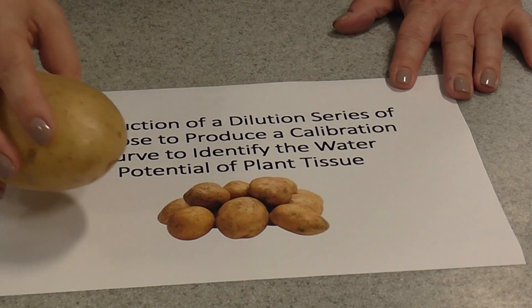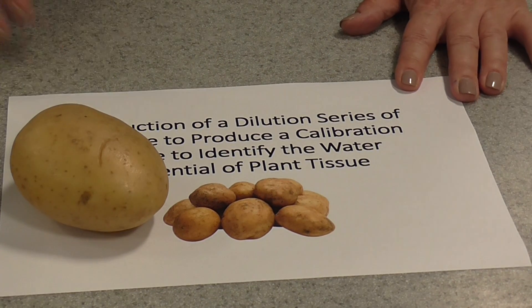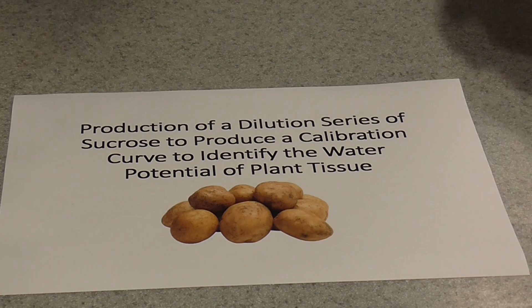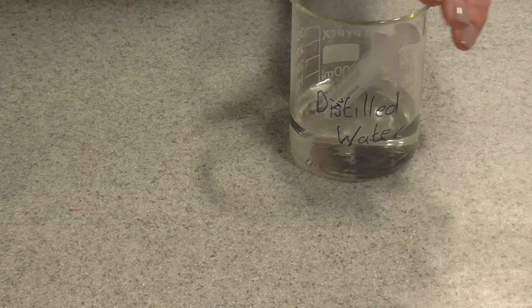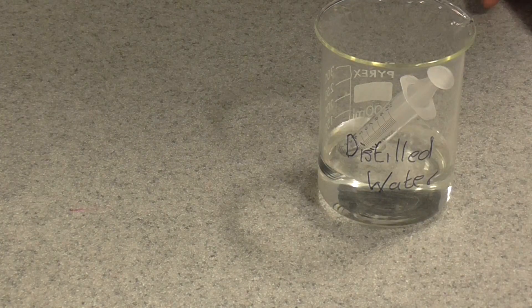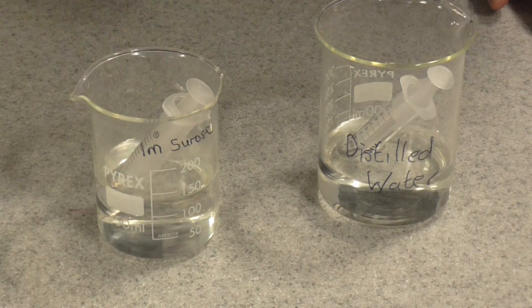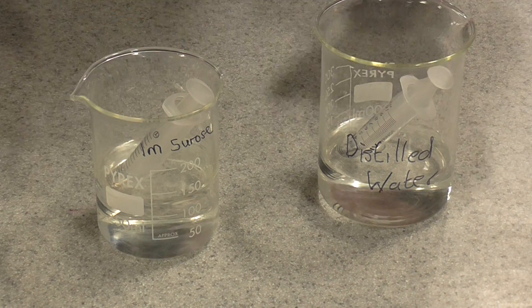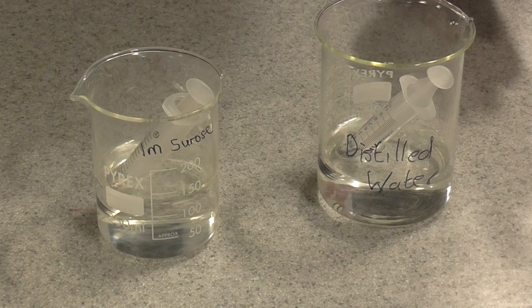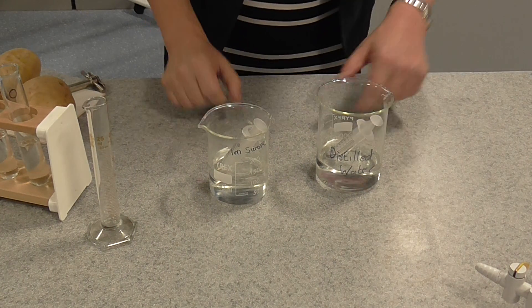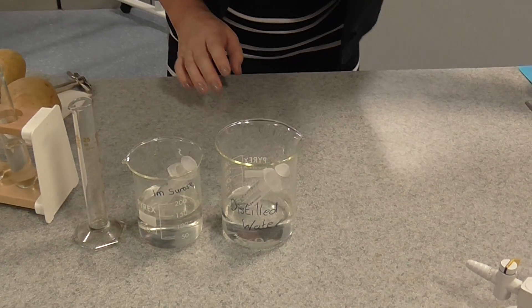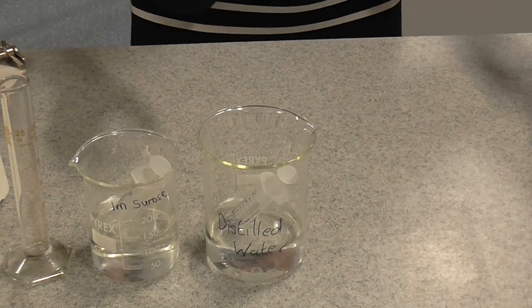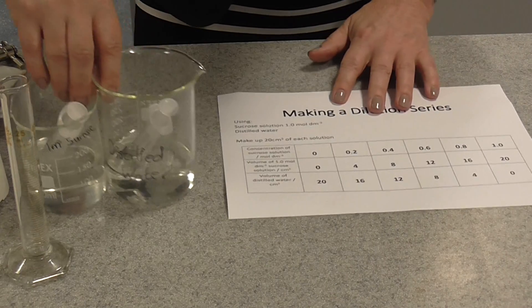The plant tissue we're going to use is potato. The first thing we need to do is make our dilution series. For this we need distilled water and a one mole per decimetre cubed sucrose solution which the technician has prepared. You can use measuring cylinders or ten centimetre cubed syringes. We're going to make up twenty centimetres cubed of each of a number of different solutions.